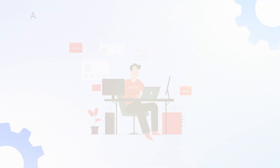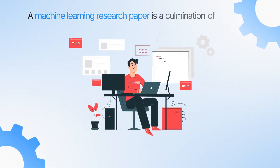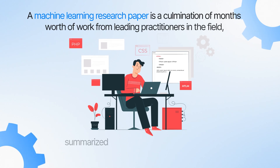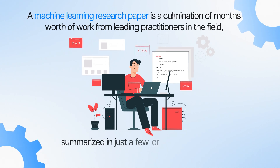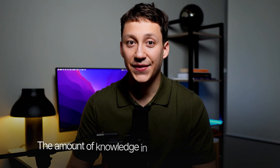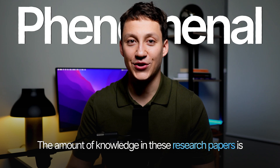A machine learning research paper is a combination of months worth of work from leading practitioners in the field, summarized in just a few or tens of pages. The amount of knowledge in these research papers is phenomenal and you can access it in just a few hours. So if you break down, dissect, and understand everything in a research paper, imagine how much you will learn.